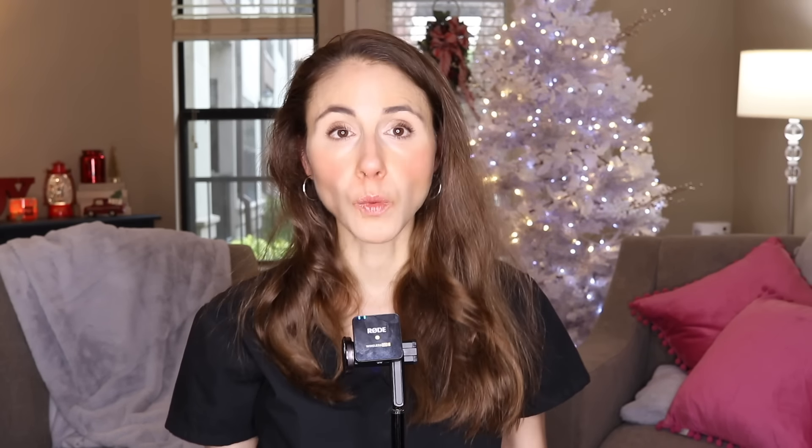Our skin normally sheds dead cells on a daily basis — that's something you don't really see with your eyes and it's a perfectly normal part of skin biology. Your skin is a barrier that protects you from the outside world and functions to keep water in, among other things like regulating body temperature. The outermost layer of your skin can be thought of as a brick wall where the bricks are little shells of former cells called corneocytes, stuck together in a lipid matrix that's like the mortar between the bricks.